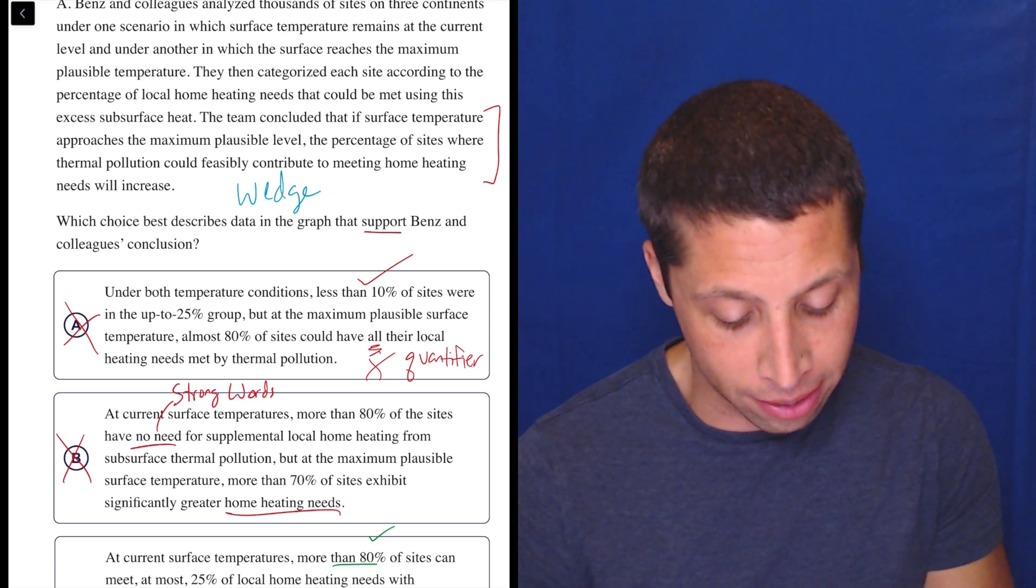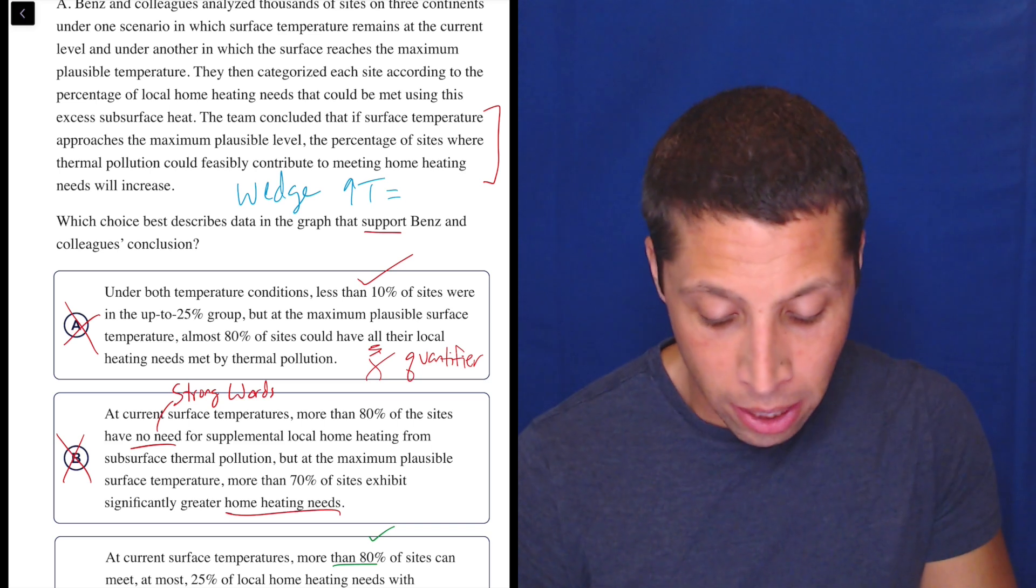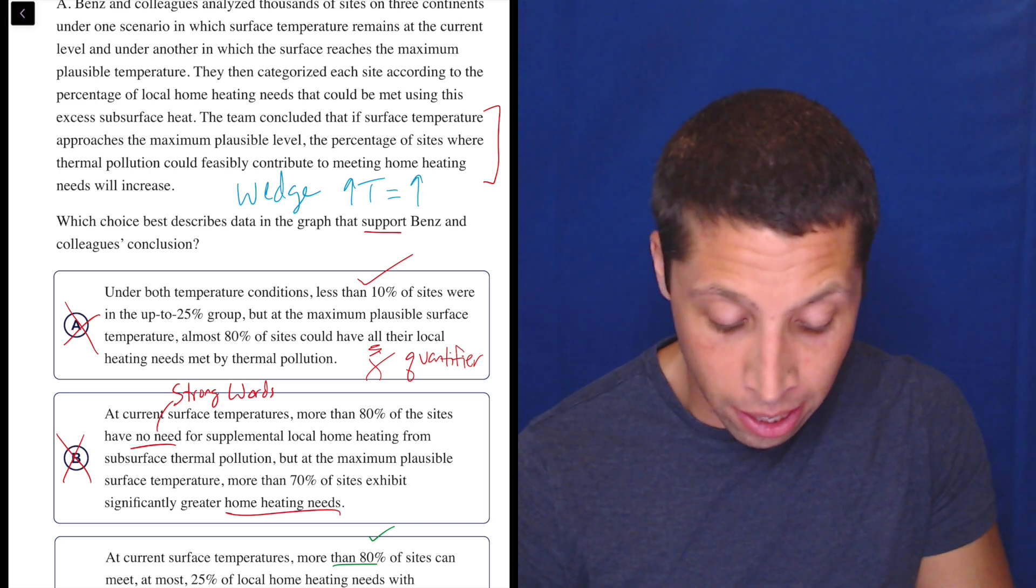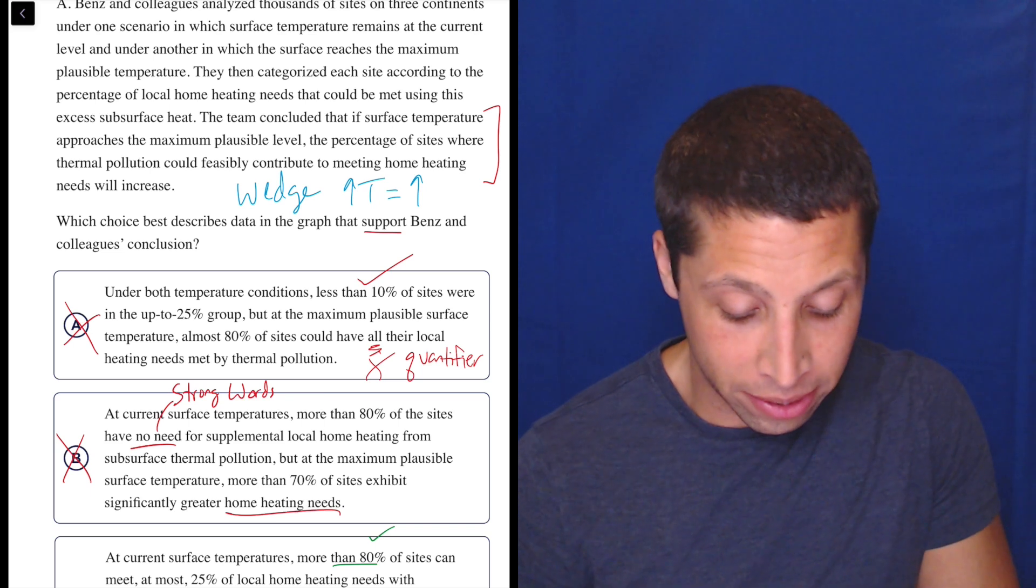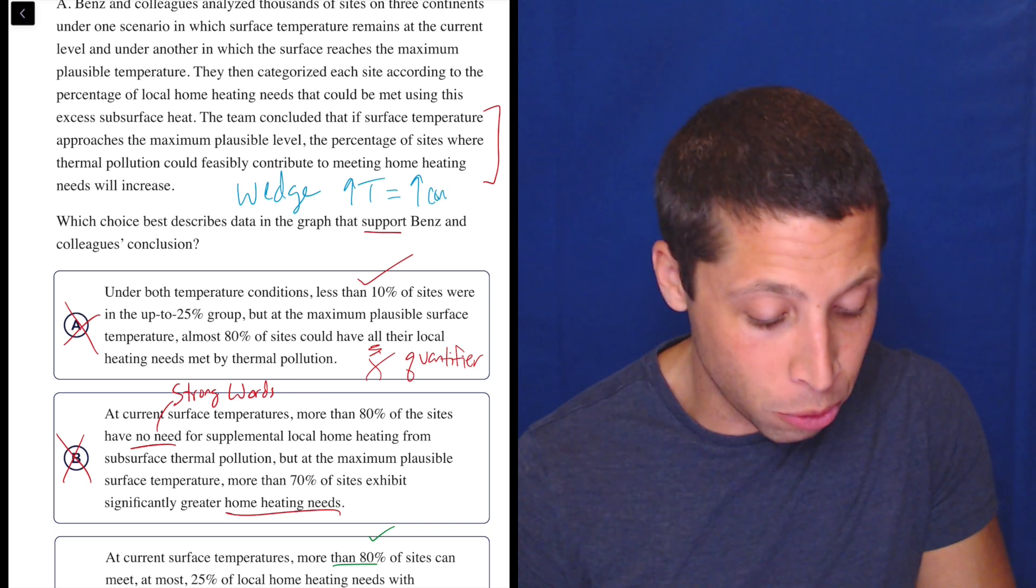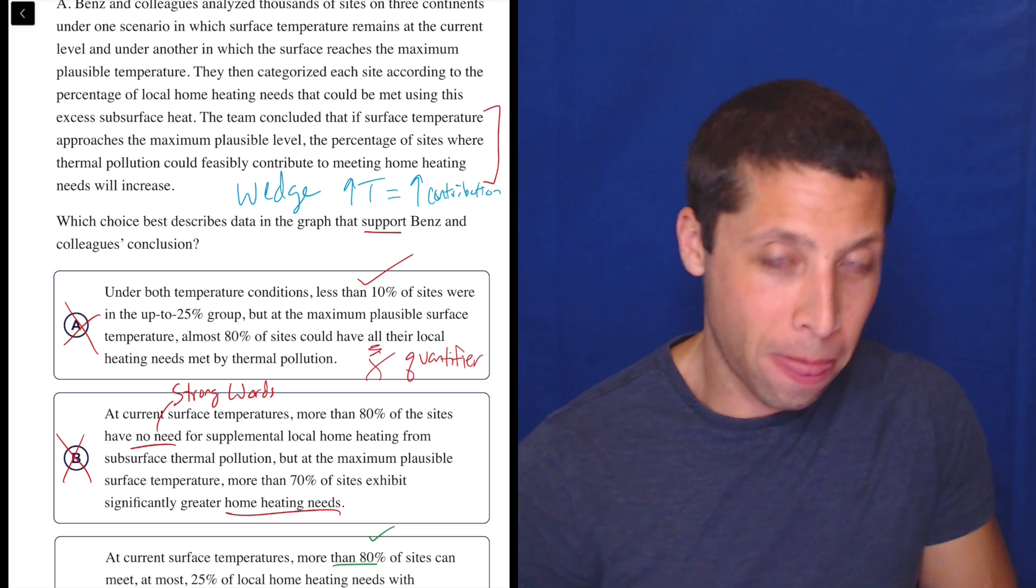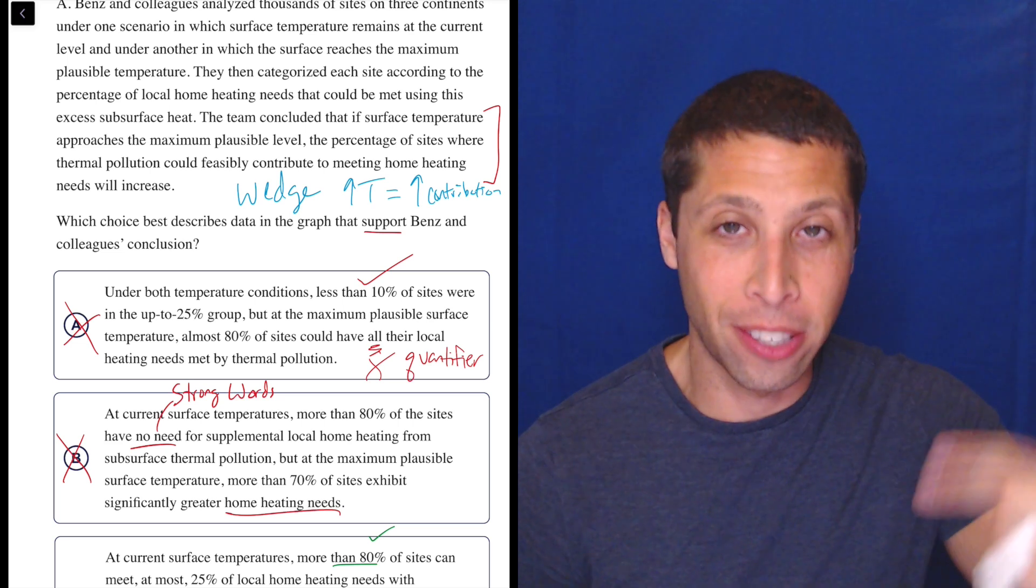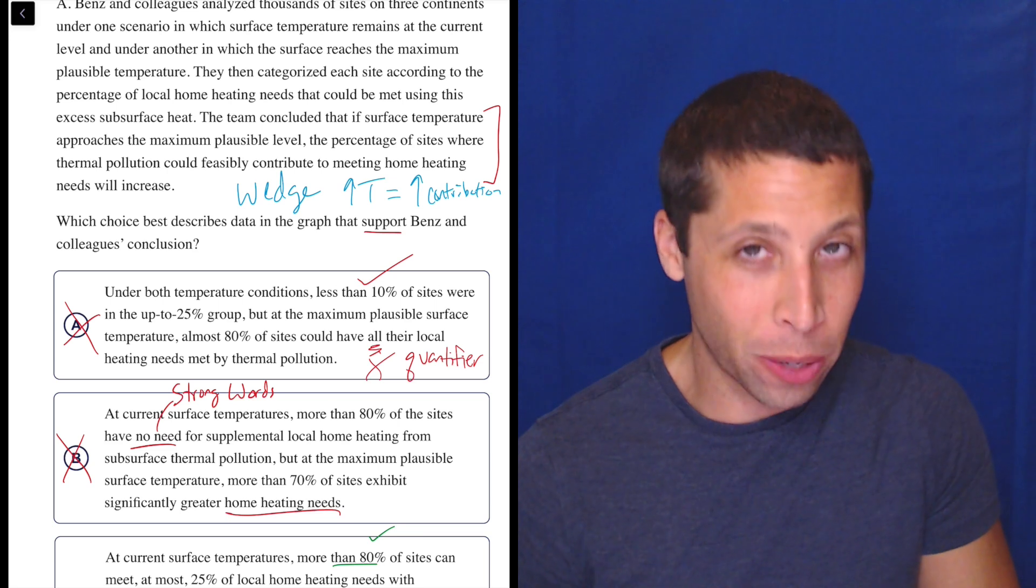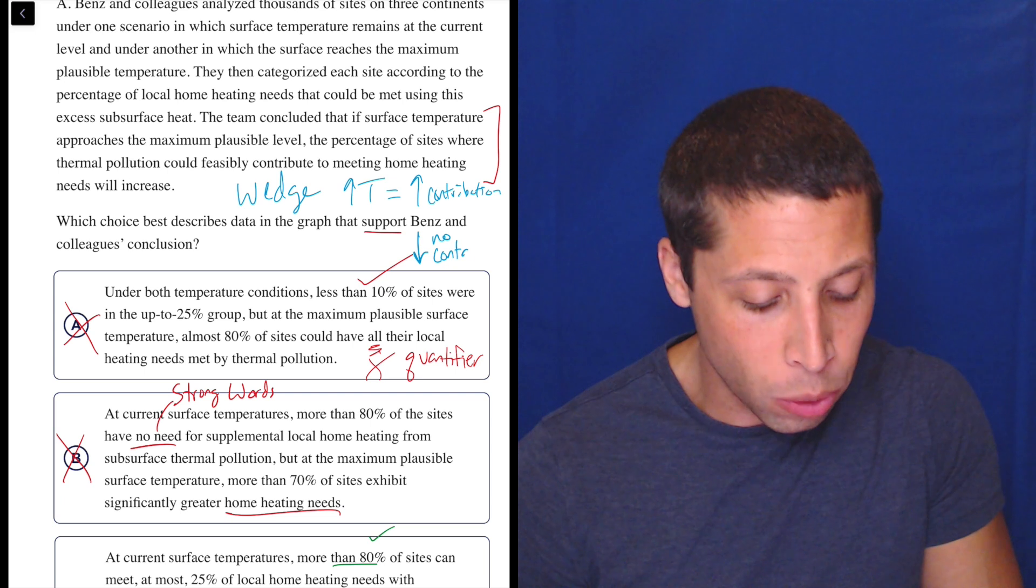So what they are saying is increase the temperature leads to an increase in contribution, right? So the more the temperature means that the more you can have the sites contribute, but this is where it gets tricky. The downside of this literally is that the fewer sites that there will be no contribution.